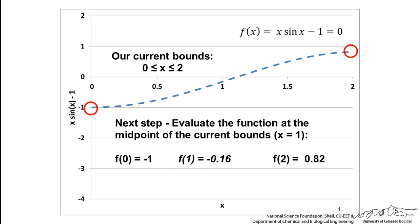The next step is to evaluate the function at the midpoint of the current bounds. So that is why it is called the bisection method. We are basically bisecting our current interval 0 to 2 and that is at x equals 1 at the midpoint. We see that the function at an x value of 1 is negative 0.16.